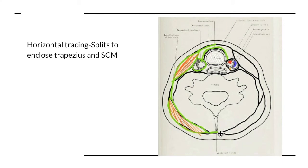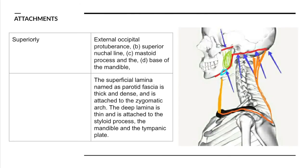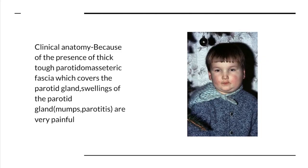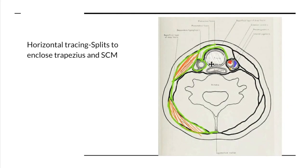At the anterior border of the sternocleidomastoid, the superficial layer is also related to the pretracheal layer, the carotid sheath, and the pre-vertebral fascia — which we'll study in the next video. To summarize: the investing layer completely encircles the neck; its superior attachments include the external occipital protuberance, superior nuchal line, mastoid process, and mandible; inferiorly it attaches to the thoracic outlet structures; posteriorly to the ligamentum nuchae; and anteriorly to the hyoid. Key features are the parotid masseteric fascia and the stylomandibular ligament.